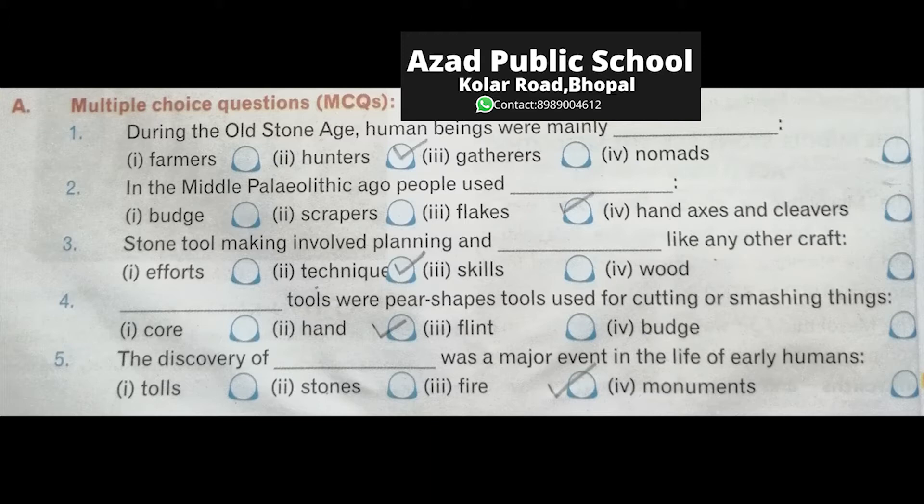Next: blank tools were pear-shaped tools used for cutting and smashing things. Which tools were used for cutting? Hand tools were used. The discovery of blank was a major event in the life of early humans.